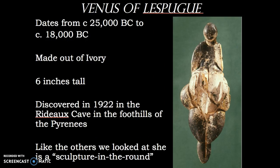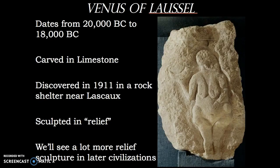One other work has dates that are pretty far ranging — about a 7,000-year span. She is made out of ivory, about six inches tall, and comes from the Rideau Cave in the foothills of the Pyrenees. It's a work found in the early part of the 20th century. The term to learn here is Sculpture in the Round, which means the artwork is three-dimensional and can be turned all the way around — meant to be viewed from all sides. This is in contrast to relief sculpture, which is meant to be seen only from one side and is usually carved into a wall, as we'll see with Greek and Roman civilizations.